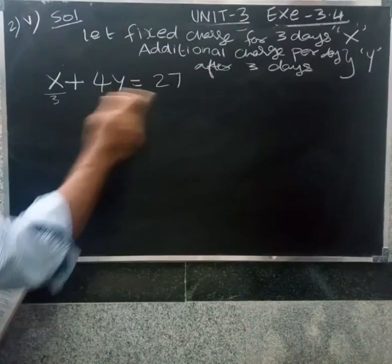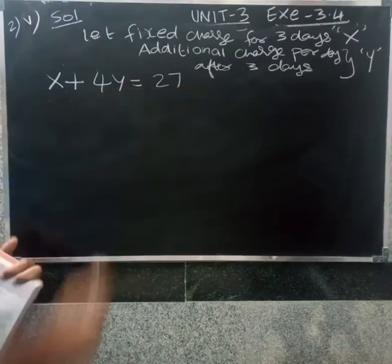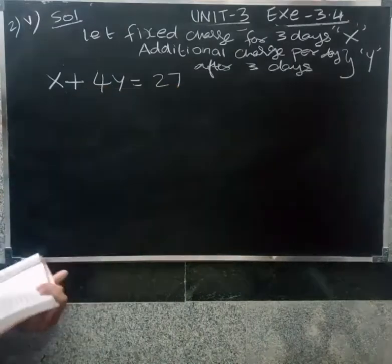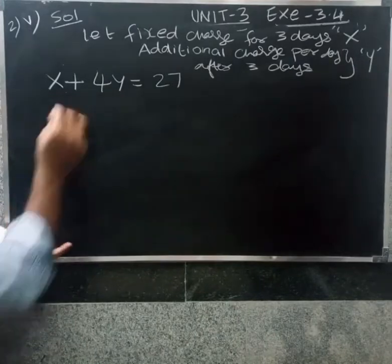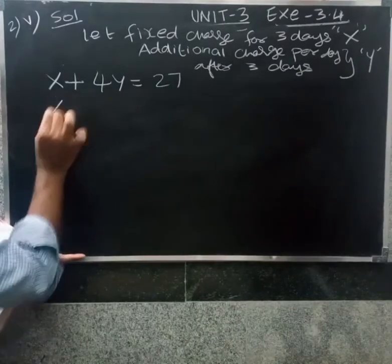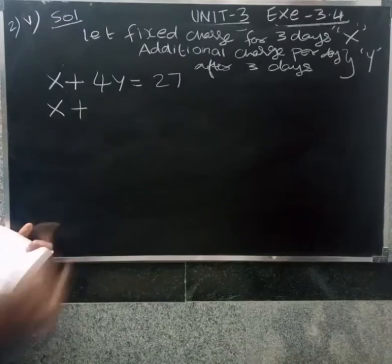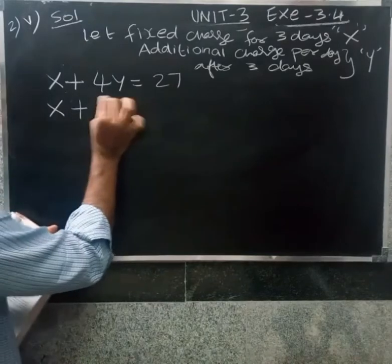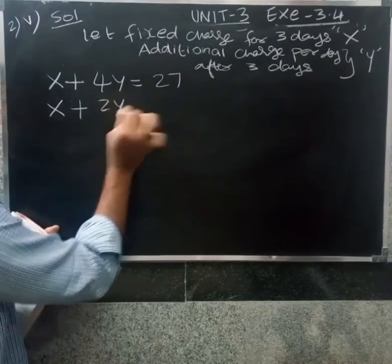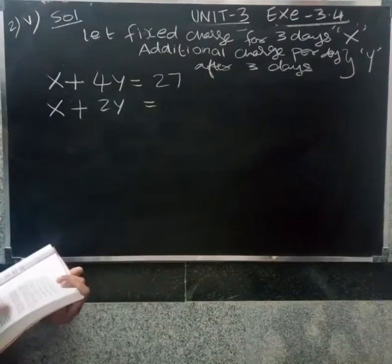For 7 days: fixed charge x plus extra days beyond 3 is 4 days, so 4y equals... giving us x plus 4y equals 27. This is the first equation. For the second condition: paid 21 rupees for 5 days. Beyond 3 days that is 2 extra days, so x plus 2y equals 21.